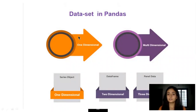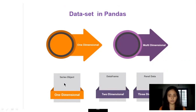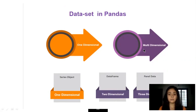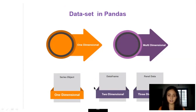There are two types of major datasets in pandas: one-dimensional and multi-dimensional. Pandas supports the series as an object — if you want to create a one-dimensional object, it is called the series object. For multi-dimensional objects, you create either a data frame or panel data. The data frame is two-dimensional data and panel data is three-dimensional. Here we will deal with the series object as one-dimensional data and the data frame as two-dimensional data.